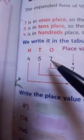Then see, suppose if you have to tell the place value of seven, so seven is in one's place. So you will write down seven, the place value of seven is seven.